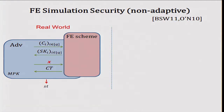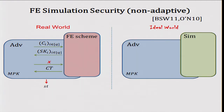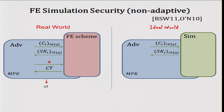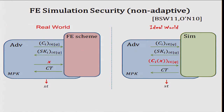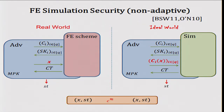This is a simulation-based definition, so it requires the existence of a simulator supporting the following interface. An adversary should also be able to issue a bunch of circuits C_i and get the corresponding secret keys. Now the simulator is not given the input X, but only the output of all the circuits evaluated on X, and its goal is to produce the ciphertext. The adversary then computes and outputs a state, and we require that the two distributions be computationally indistinguishable.